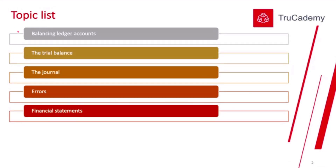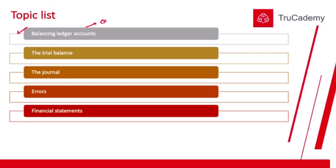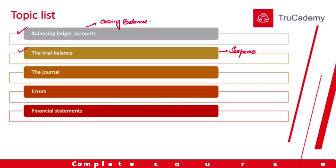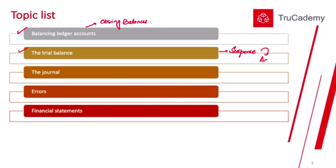The topic list for this chapter includes: first, balancing ledger accounts — we already know how to balance T-accounts and calculate their closing balances. Then, how to prepare the trial balance, and if it doesn't balance, how to open a suspense account and make corrections.